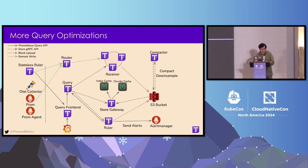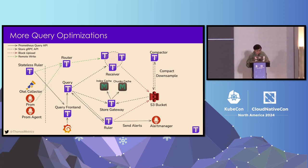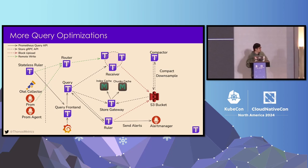For your long-term storage, the Store Gateway also introduces an index cache and a chunks cache. These are basically memcached or Redis clusters. They can cache what you query for each block on S3 and make it much faster to serve the query results next time. That's all I have for the introduction part.